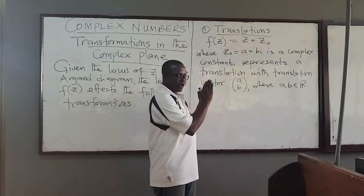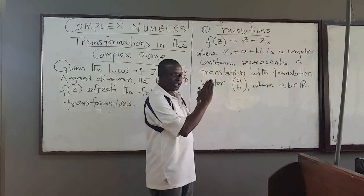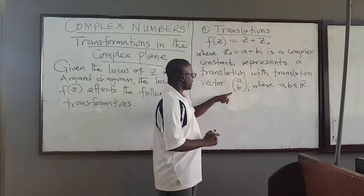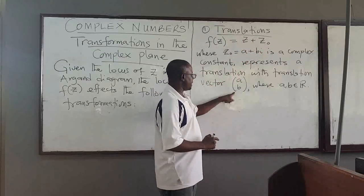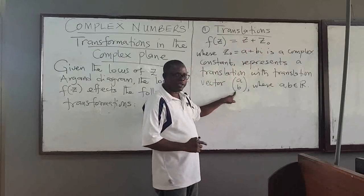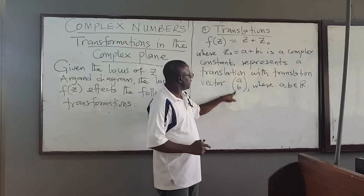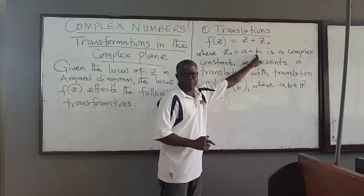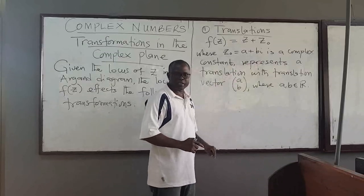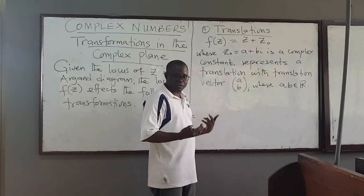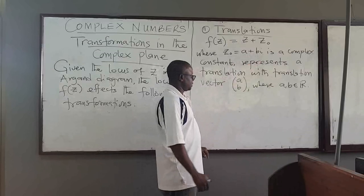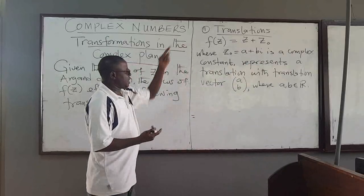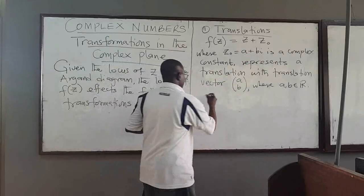If f(z) is equal to z plus some constant complex number z-naught, then this transformed z represents a translation. You have a point, and you just shift it by this translation vector a, b — where a and b come from the constant complex number you are adding. That is translation.